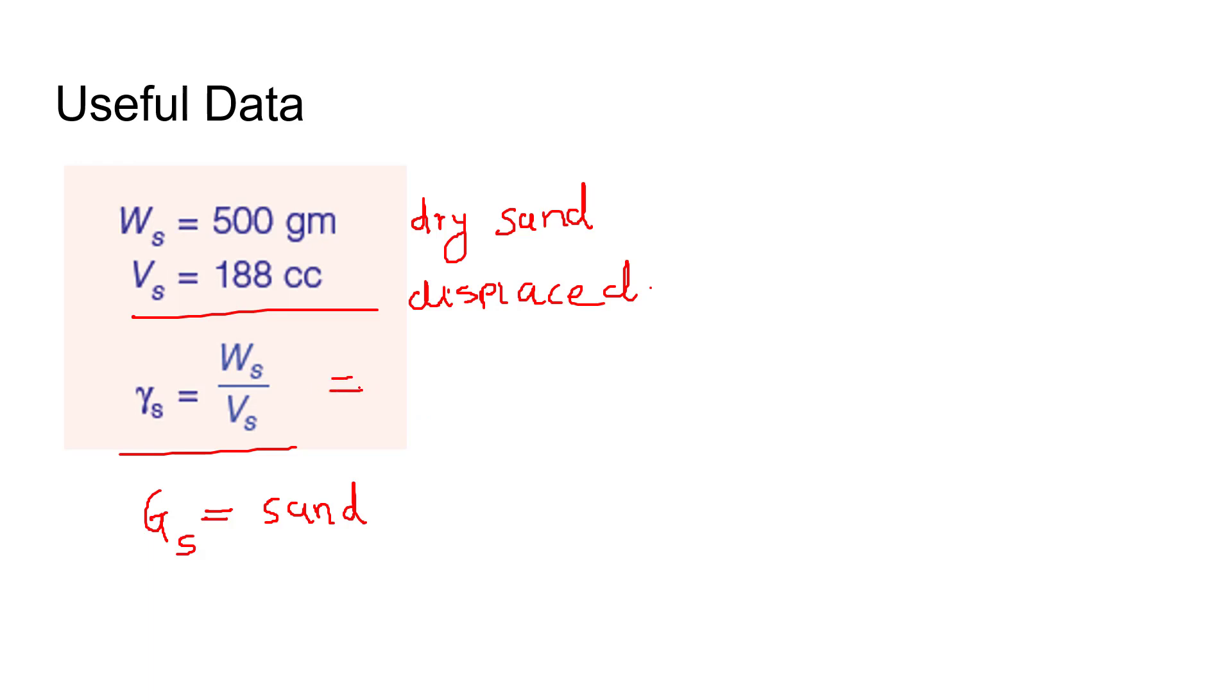So first of all, find out the density of sand. Weight of sand is 500 grams and volume is in centimeter cube, 188 centimeter cube. So it will come out to be 2.66 gram per cc for this density.